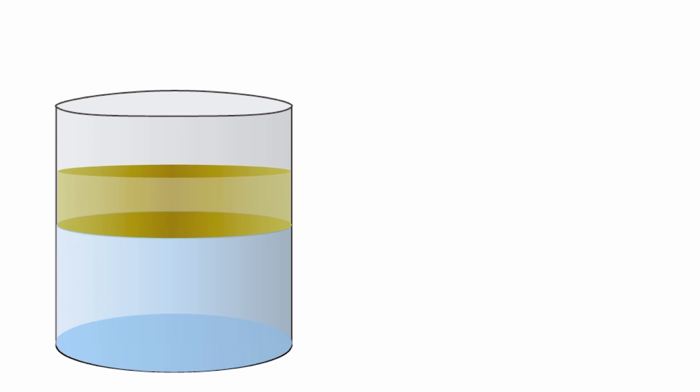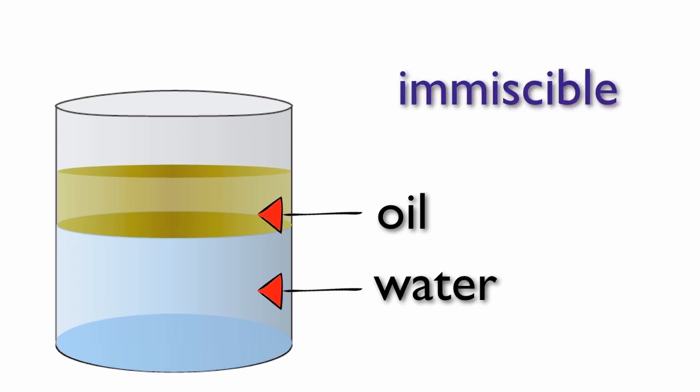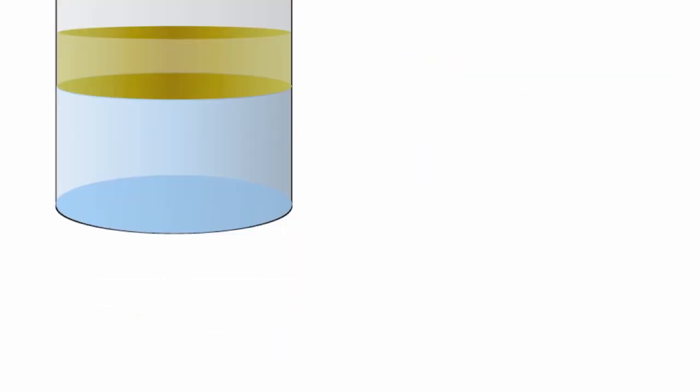As an example, when oil and water are added together, they form two distinct layers. This is because they are immiscible with one another. In other words, they do not mix even if you shake these two liquids vigorously.